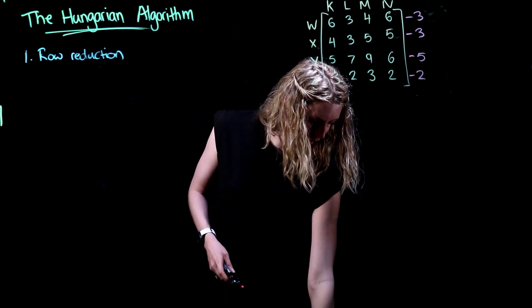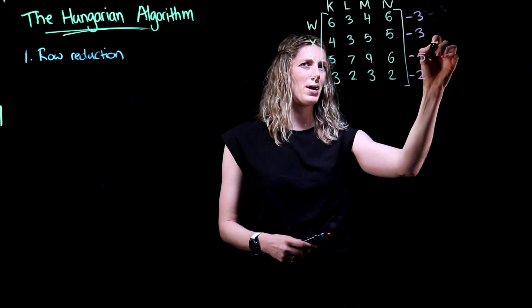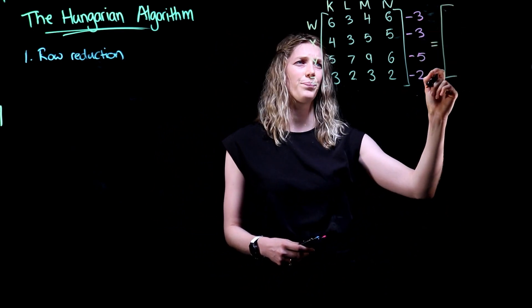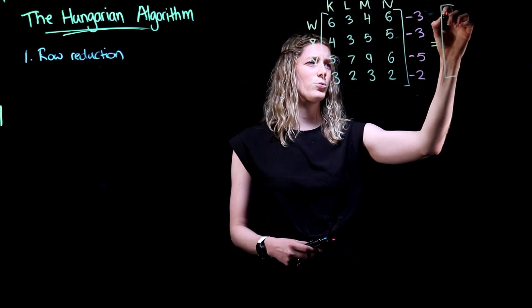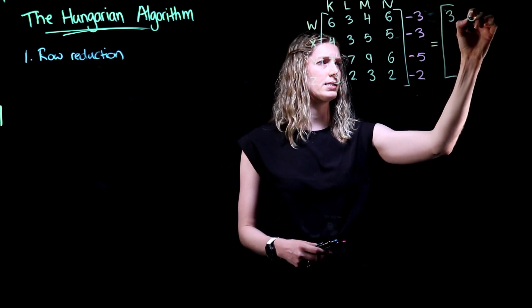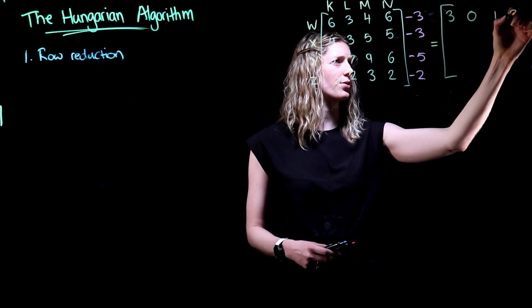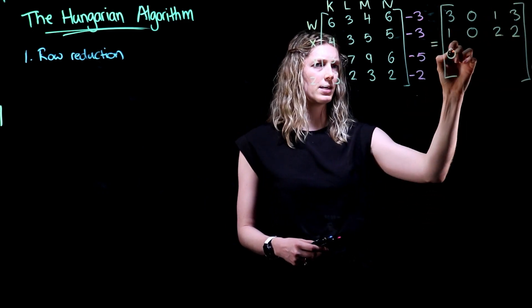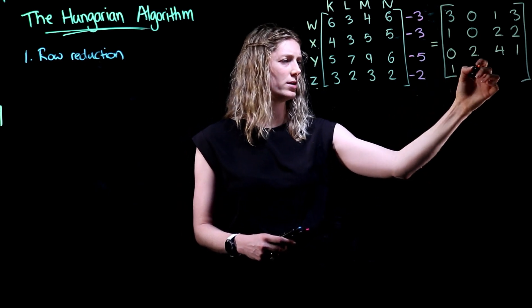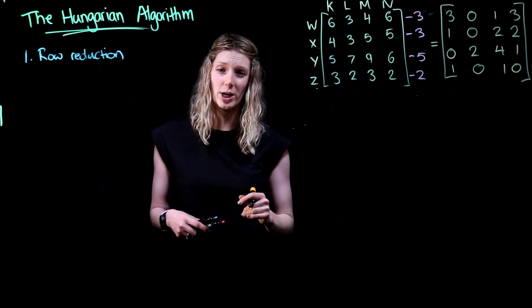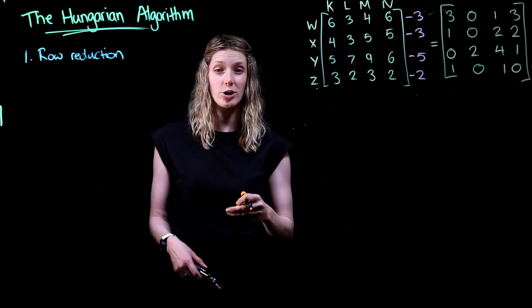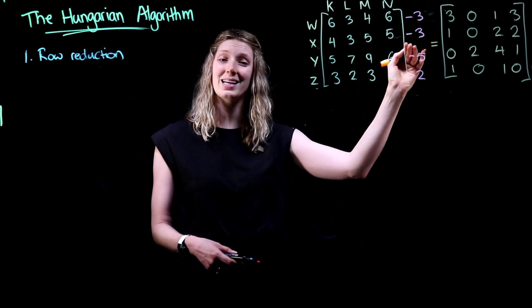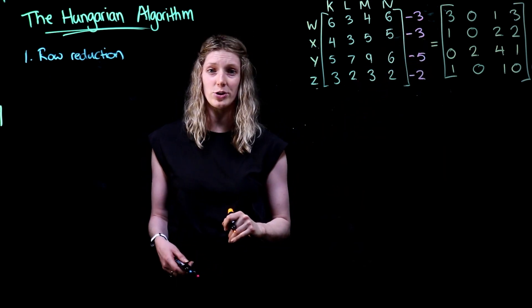This now gives us our new matrix after the row reduction has occurred. Our first row will now be 3, 0, 1, 3. Our second row will be 1, 0, 2, 2. Our third row will be 0, 2, 4, 1. And our fourth row will be 1, 0, 1, 0. One way to check that you've completed the row reduction correctly is to make sure that you have at least one zero present in each row of your resultant matrix.